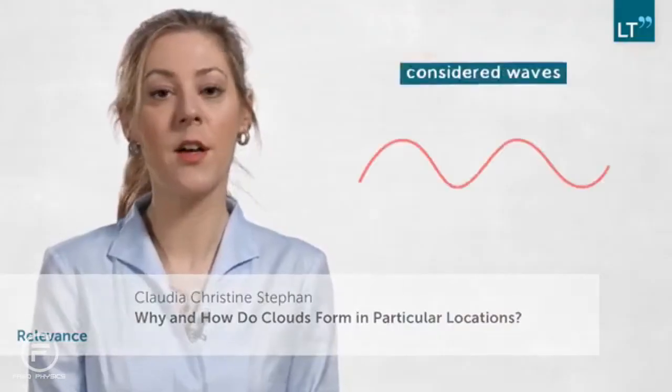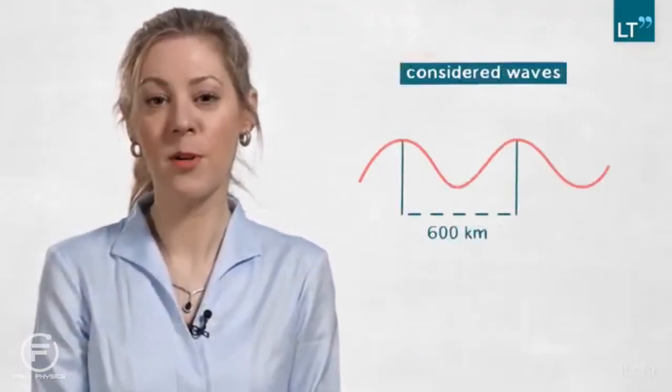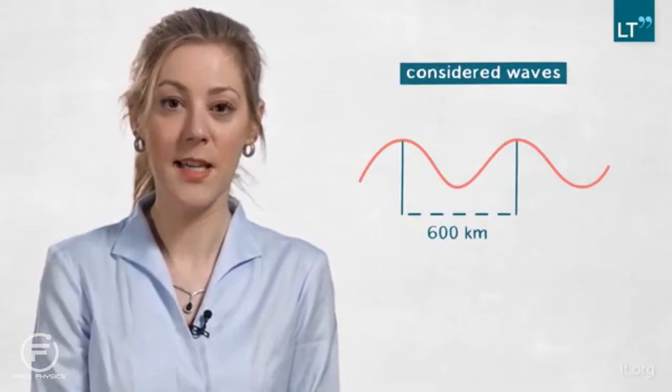So clouds and their coupling to circulation are still a major uncertainty in climate projections. The waves we considered are large scale, and they are able to propagate far distances inside the troposphere. Now given that their sources, convection, is present most of the time somewhere in the tropics, we can expect these waves to be present in most locations most of the time.